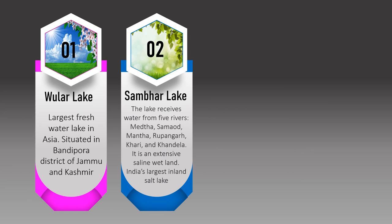Sambhar Lake is situated in Rajasthan. This lake receives water from five rivers: Medhata, Samaoda, Mantha, Rupangarh, Khandel, and Khari. It is an extensive saline wetland — meaning it is very salty with high salt content — and it is India's largest inland salt lake.